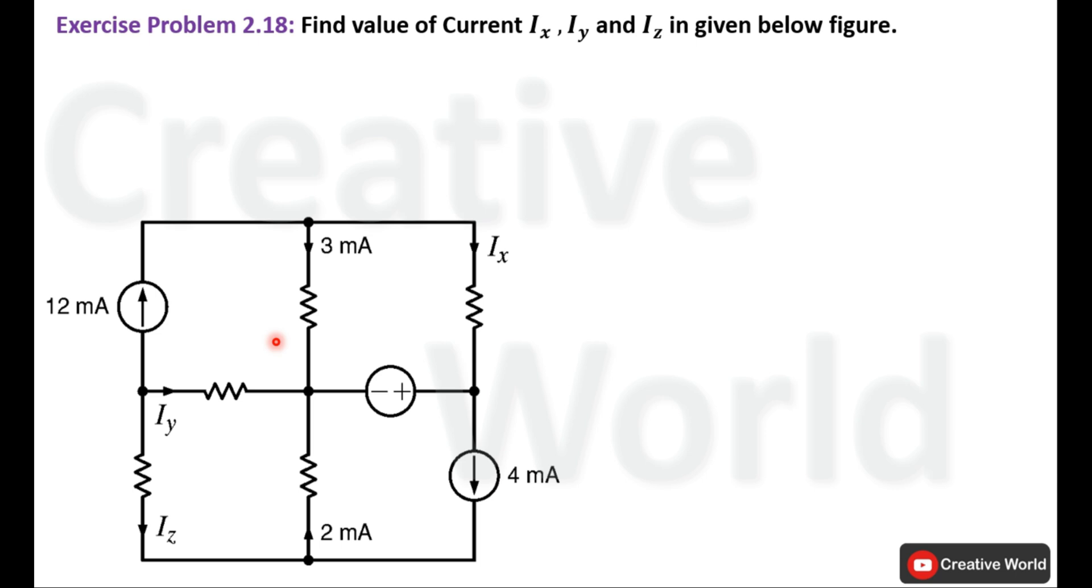If we observe inside the circuit, the information that is provided is in the form of currents and it is also asked to calculate the value of currents as well. No other parameter is specified, so we will use Kirchhoff's Current Law that is purely based on currents.